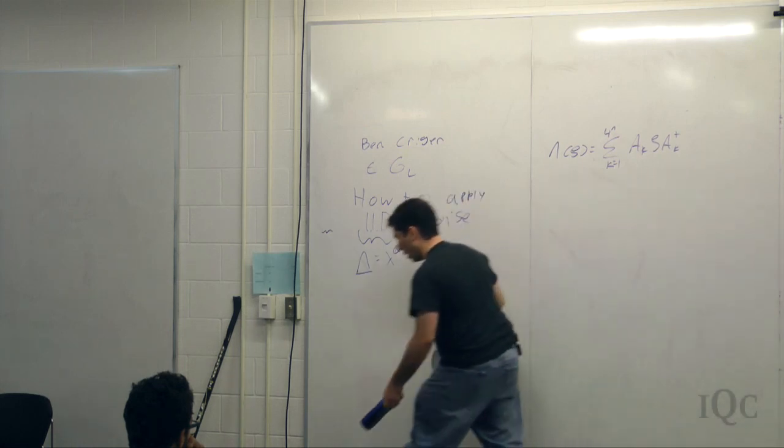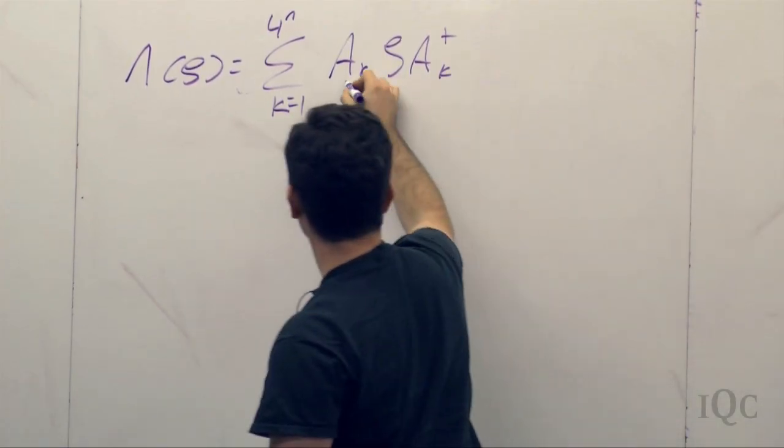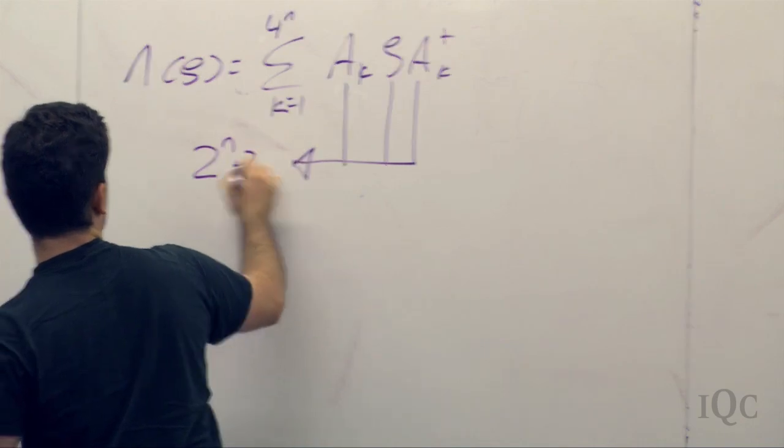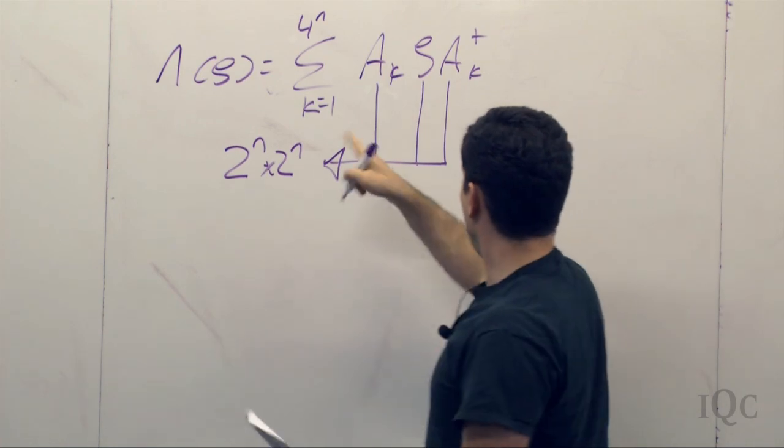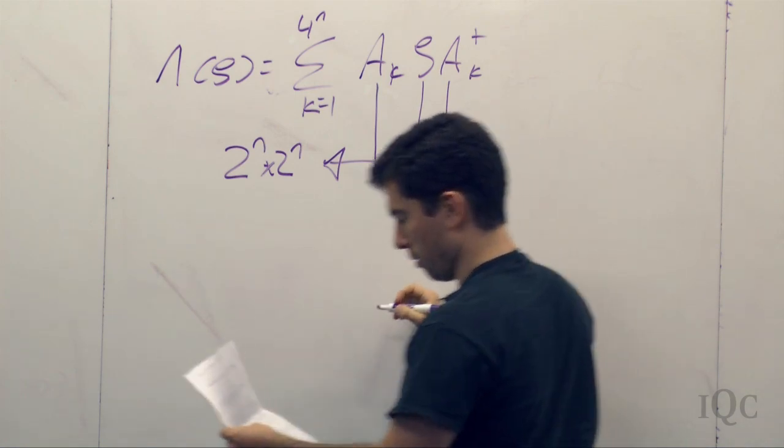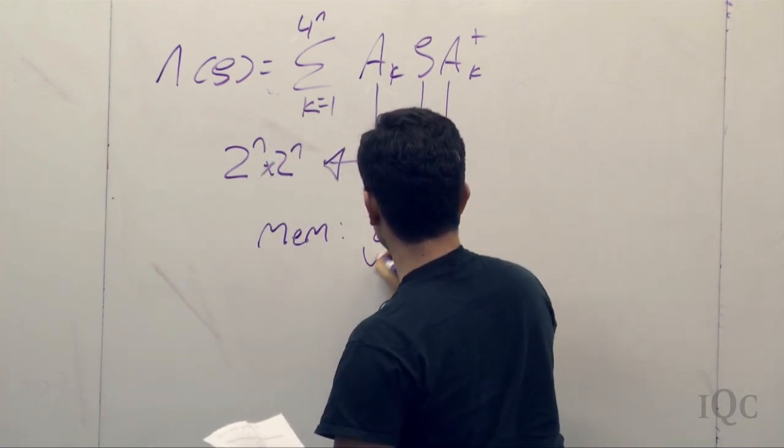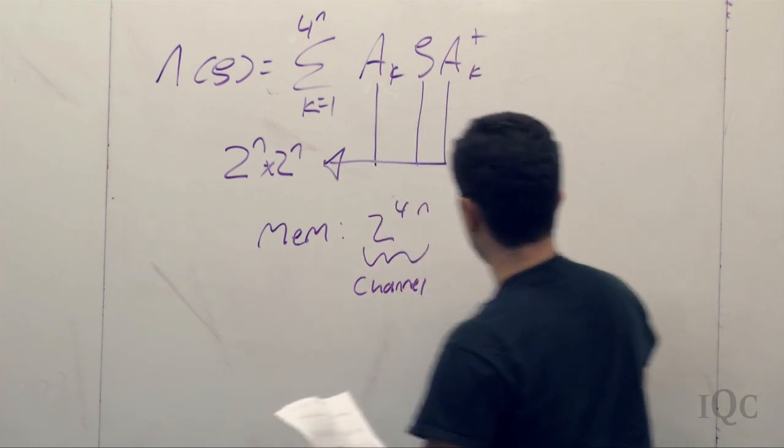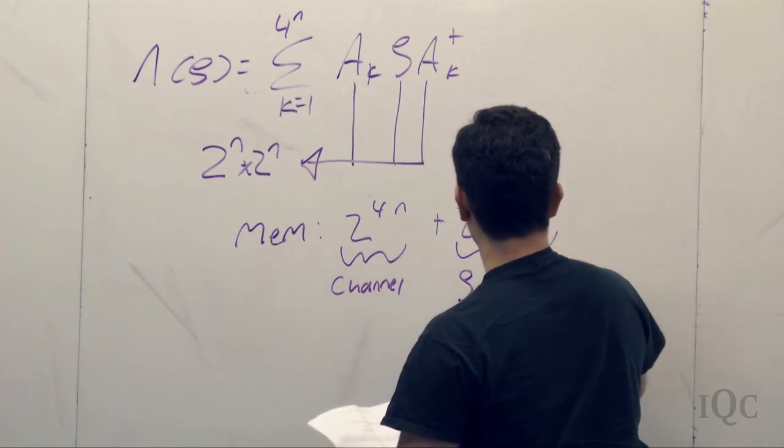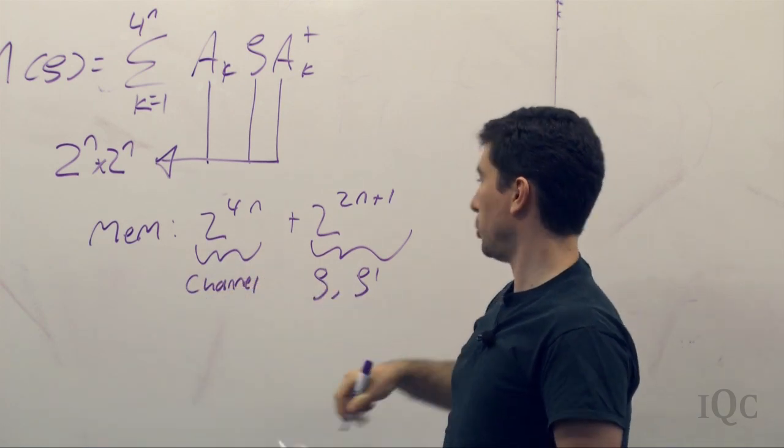That basic update having been given, how much memory and CPU time does this take on a classical computer? Each one of these matrices, because they all have to be the same dimension, is 2 to the n by 2 to the n, where you have n qubits. You have to do two matrix multiplications, 4 to the n times. So first off, the amount of memory, it's 2 to the 4n for the channel, plus 2 to the 2n plus 1, rho and rho prime, which is the output, because you have 4 to the n Kraus operators, and you have two density matrices that you have to store.